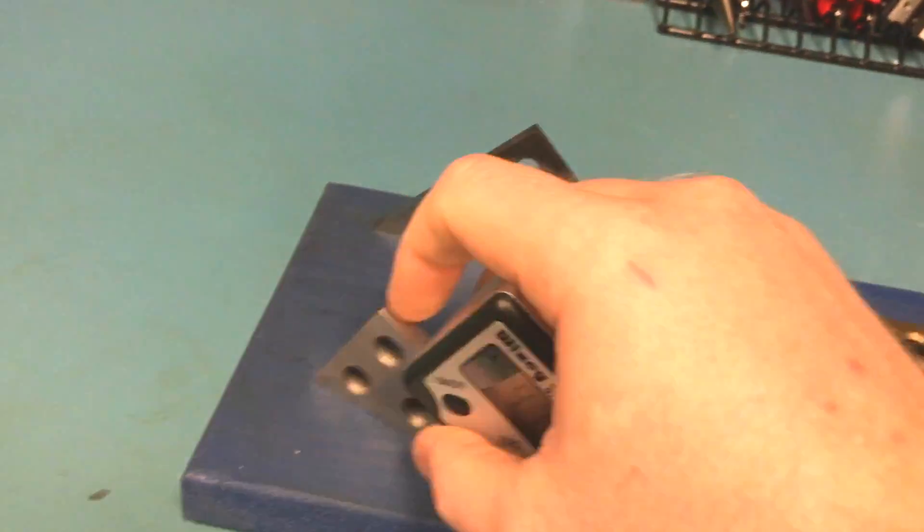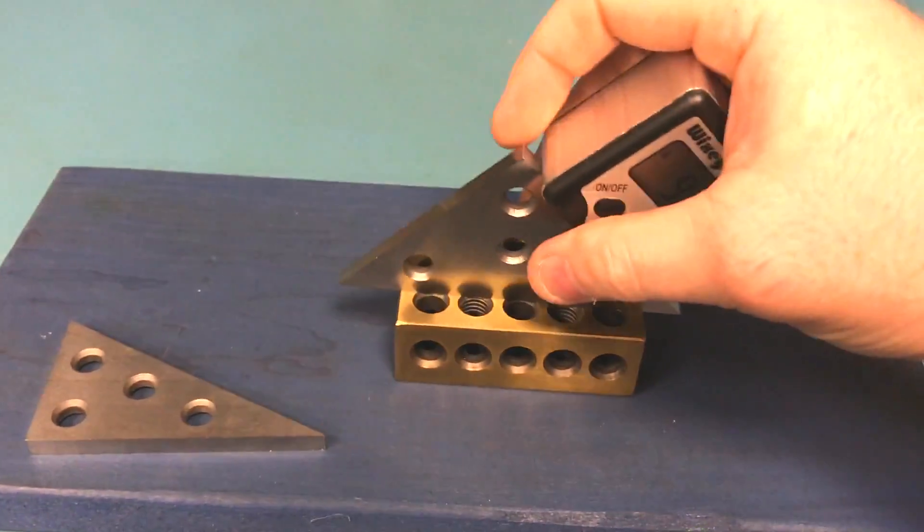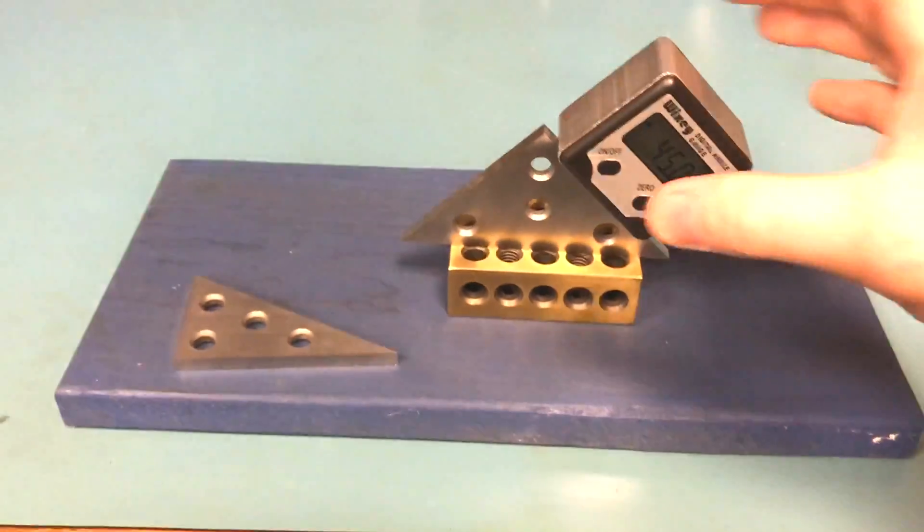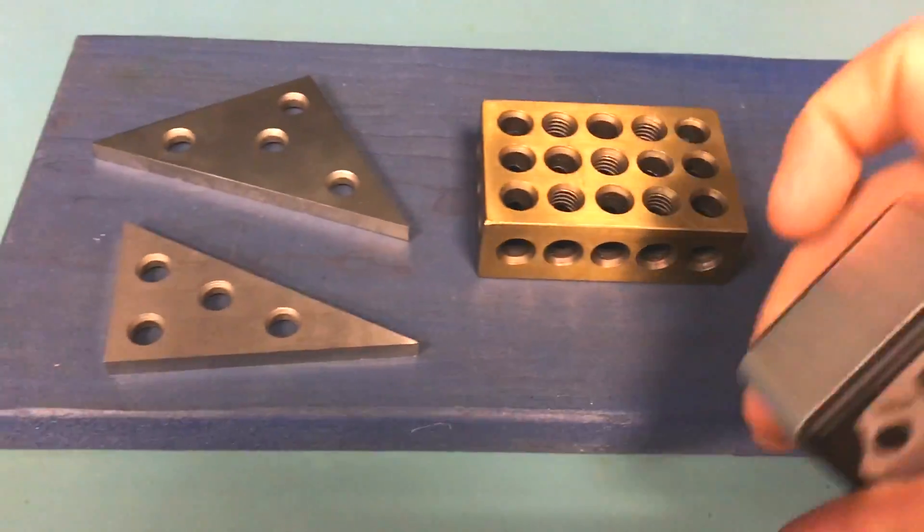And this is a 45 degree angle gauge block. So it works pretty well. So let's see what the inside looks like.